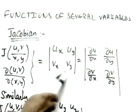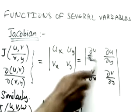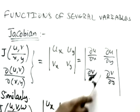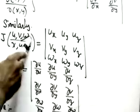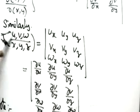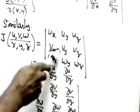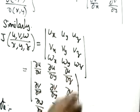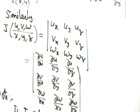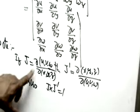The Jacobian formula is a determinant: u_x, u_y in the first row and v_x, v_y in the second row, where u_x means ∂u/∂x (partial differentiation of u with respect to x), u_y means ∂u/∂y, and similarly for v_x and v_y. For three variables u, v, w and x, y, z, the Jacobian is the determinant with rows [u_x, u_y, u_z], [v_x, v_y, v_z], [w_x, w_y, w_z]. You must memorize these formulas.